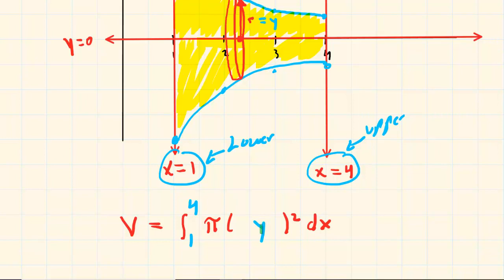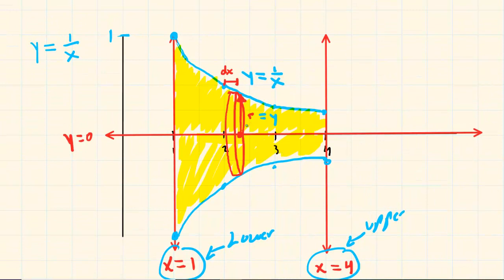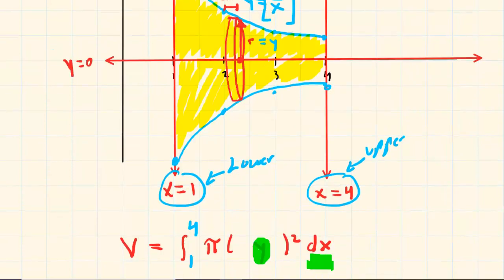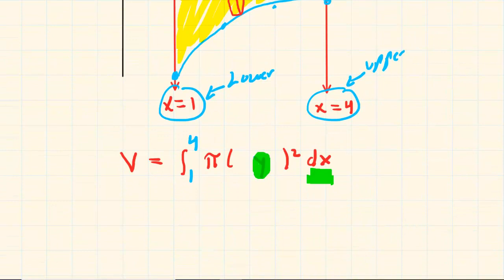The only other little tweak here that we have to do is to notice that we have y in our expression, but we're integrating with respect to x. So you have to go back and you have to substitute something in for y. Remember, the radius was the measurement drawn up to this blue curve right here, and that blue curve had the equation y equals one over x. So you can replace the y with the expression one over x.